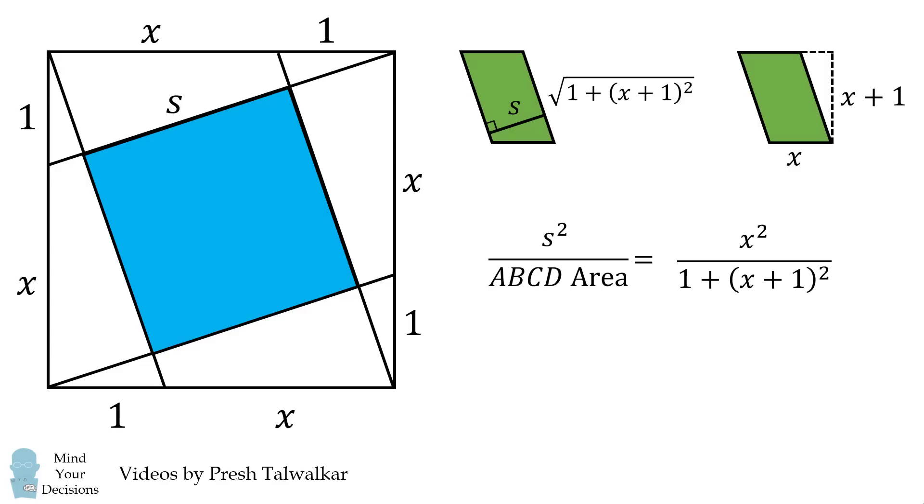We can then solve for particular values. For example, if x equals 2, we can easily calculate that the fraction shaded in blue will be equal to 2 over 5. And that's the answer.